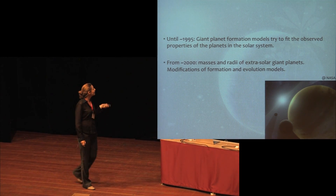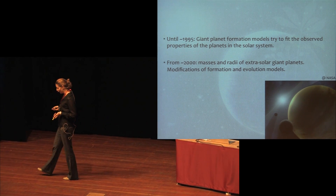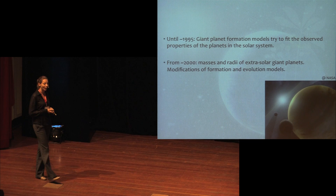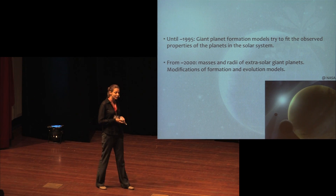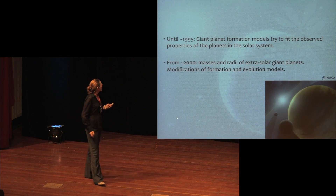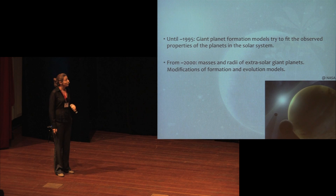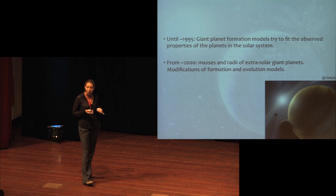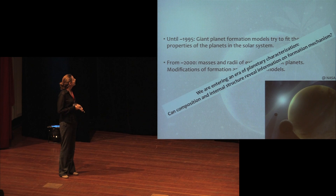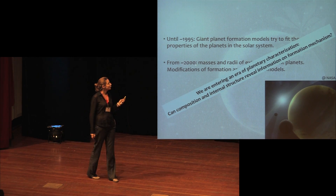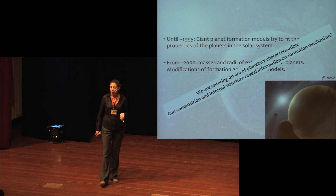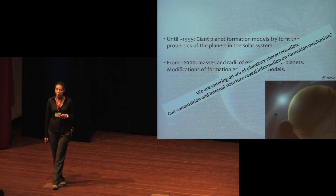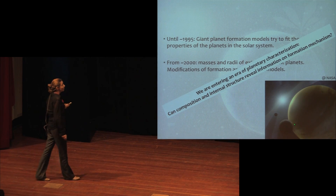Since the last few Protoplanet conferences, a big difference is that until about 1995, giant planet formation models tried to explain only the giant planets in our own solar system — Jupiter, Saturn, Uranus and Neptune. That changed a lot at the beginning of the 2000s when we had masses and radii of exosolar giant planets, and we realized we needed to modify our models. Now we are entering a time in which we try to characterize exosolar planets, making it important to link composition and internal structures to formation mechanisms.